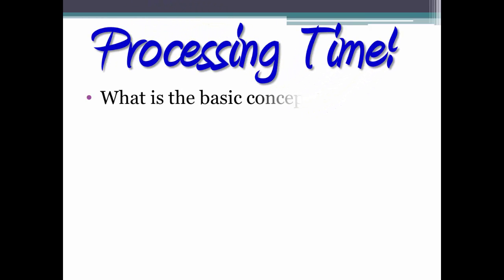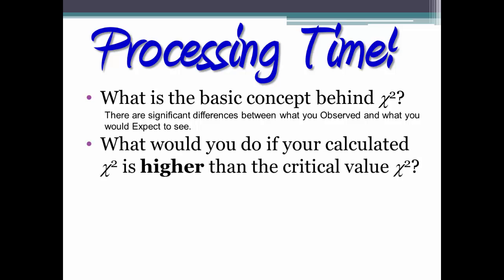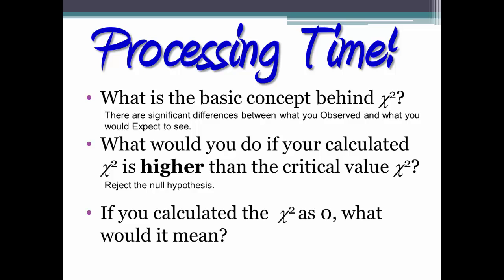Processing time. What is the basic concept behind chi-square? That there are significant differences between what you observed and what you would expect. What would you do if your calculated chi-square is higher than the critical value? You should reject the null hypothesis and accept the alternative chi-square hypothesis. Remember: if the calculated chi-square is higher than the critical value, you reject the null; if it is lower, you accept the null. If you calculated the chi-square as zero, that would mean there is no difference between what you observed and what you would expect — the two sets of numbers are identical.